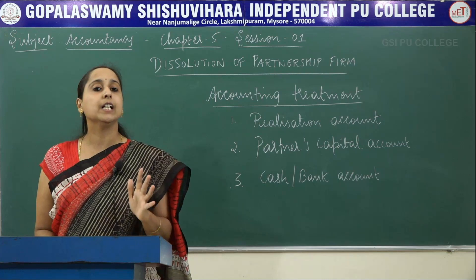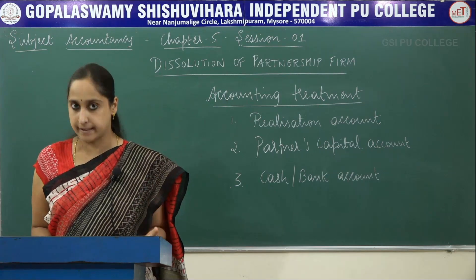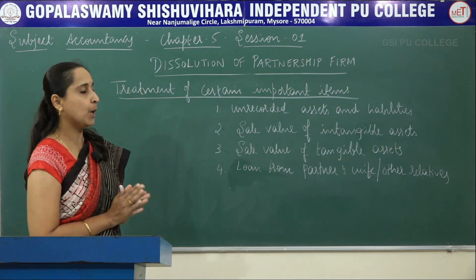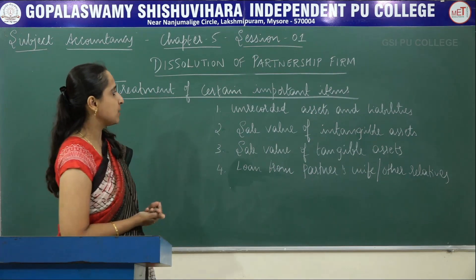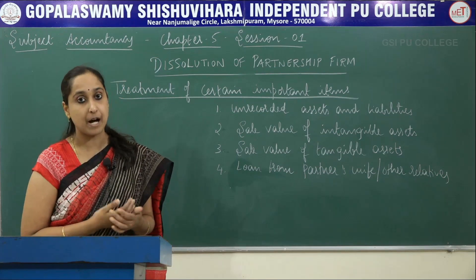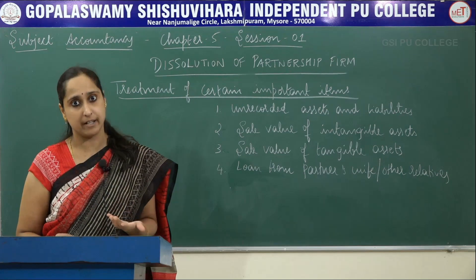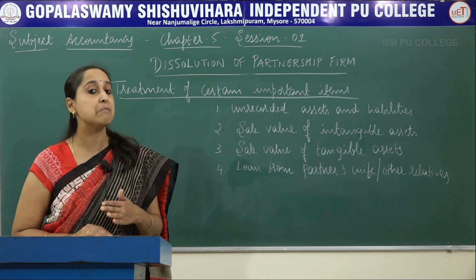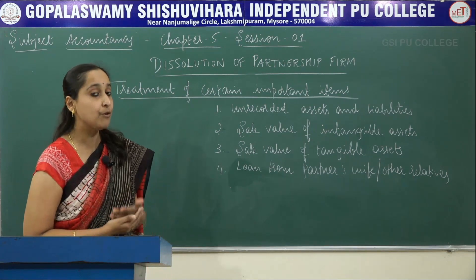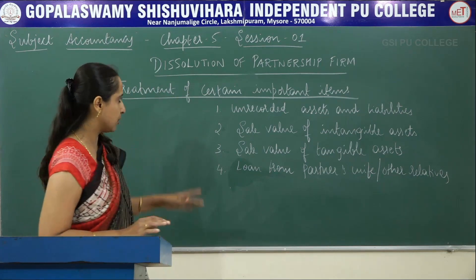So in dissolution of the partnership firm, we usually prepare three accounts: Realization Account, Partner's Capital Account, and Cash or Bank Account. Next topic is treatment of certain important items. At the time of dissolution, partners may come to know that there are a few assets and liabilities which have not been recorded, so we have to record those unrecorded assets and liabilities.